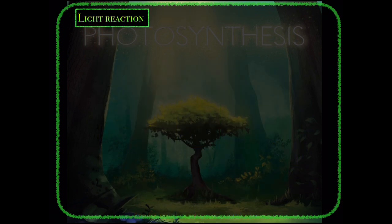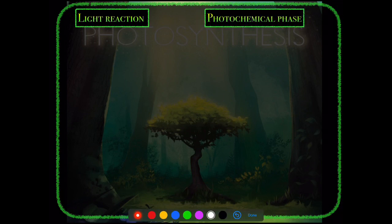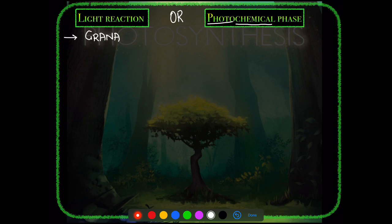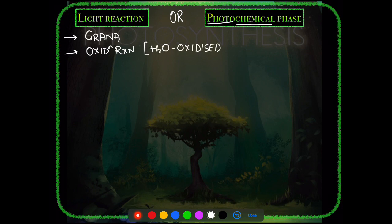The two phases of photosynthesis are the light reaction and dark reaction. The light reaction is also called the photochemical phase because it involves light (photo) and produces chemicals — ATP and NADPH. The site of the light reaction is where photosynthetic pigments are located, that is the grana. The aim of the light reaction is oxidation of water.